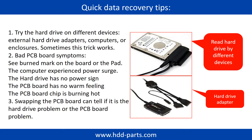There are some simple ways to recover data from a hard drive. One is to try reading the hard drive with different devices, like different external hardware adapters, computers, or enclosures, because different devices use different methods to read a hard drive and sometimes this trick works. Another way is swapping the hard drive PCB board, which can fix problems caused by the PCB board. There is a cost to swapping the PCB board, but it is much cheaper than sending the hard drive to a data recovery firm.